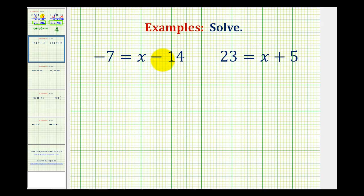For negative 7 equals x minus 14, we want to manipulate the equation so it's in the form of some number equals x.